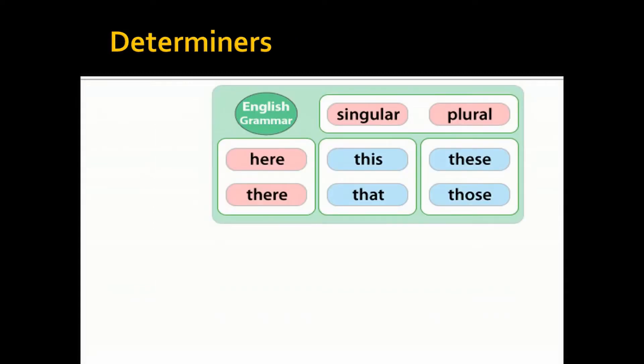Determiners, or kata penentu. To explain our parts of body, we use some determiners like this, that, these, and those. This and that are used for singular. Examples: mouth, nose, forehead, stomach.